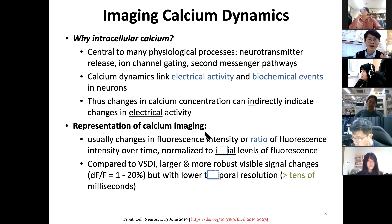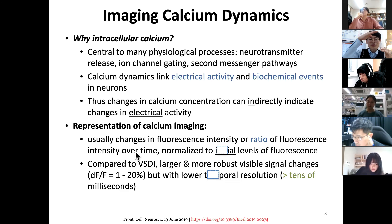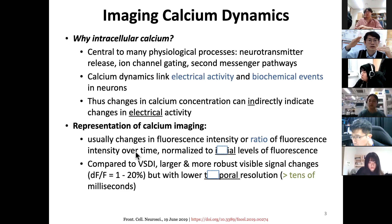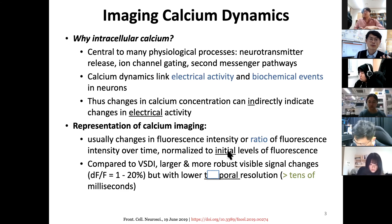One technique to address this is taking the ratio of fluorescence intensity over time. The background may be changing, so it is a good idea to normalize based on the initial background level. Normalization to initial levels of fluorescence is a way to make your measurement more quantitative.